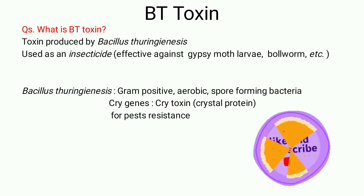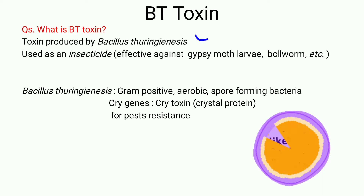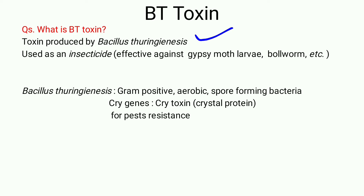This BT toxin is produced by the organism Bacillus thuringiensis, which is a gram-positive aerobic spore-forming bacteria. When the spore is being formed inside this bacteria, just beside the spore there is a formation of a crystal protein known as cry toxin, or commonly as BT toxin.